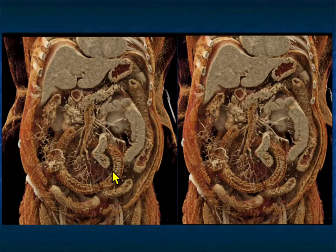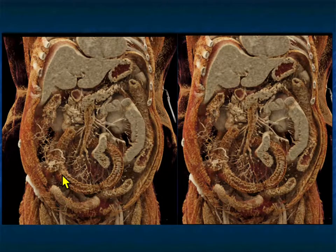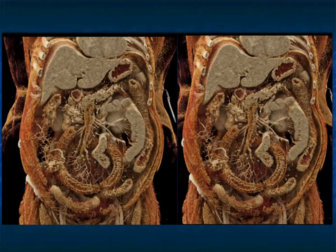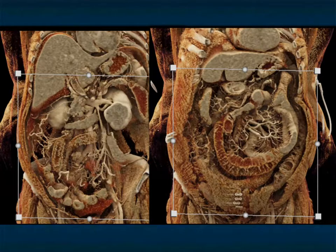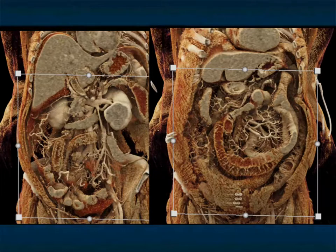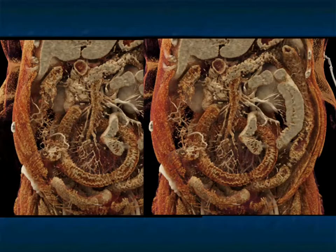In the right setting, this could be graft versus host, it could be ischemia, it could be Crohn's. Look at the mucosal enhancement, the submucosal edema, the vasculature — the thrombus is really nicely shown on these images. The ability to look at colon and small bowel using cinematic rendering is something we're putting a lot of effort into, and you'll see some new articles about that soon. Look at the detail in this patient with ischemic bowel.